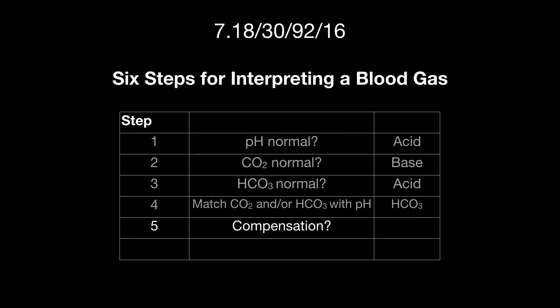The next step, step five, I look for compensation in either the CO2 or the bicarb. And in fact, in this case, the CO2 is lower than it should be. It's alkalotic, and therefore, it's compensating the pH, which is acidic.